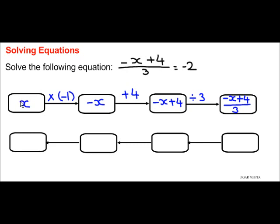Now I'm going to go backwards using opposite operations to get the value of x. Starting with -2, because (-x + 4)/3 is given as equal to -2.